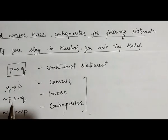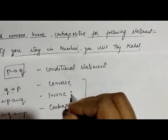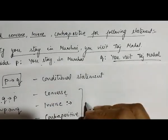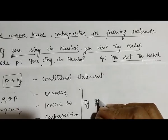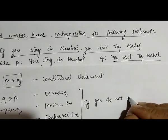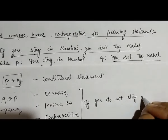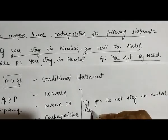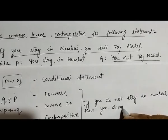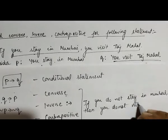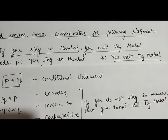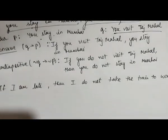The inverse becomes 'if not p then not q'. What is p here? 'You stay in Mumbai.' So not p gives us: 'if you do not stay in Mumbai then you do not visit Taj Mahal'. This is how we prepare the converse, inverse, and contrapositive.